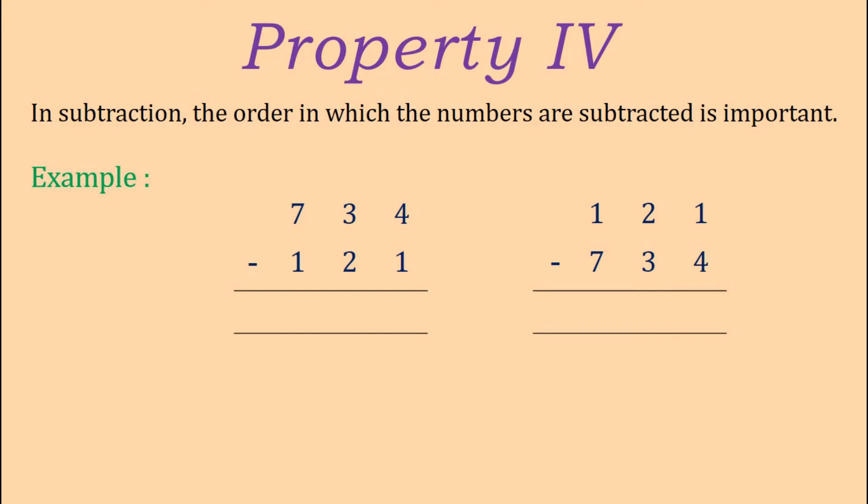Therefore, the difference which we get by subtracting 734 minus 121 is not equal to the difference which we get by subtracting 121 minus 734. So the above example clearly shows that in case of subtraction, we cannot change the order of the numbers.